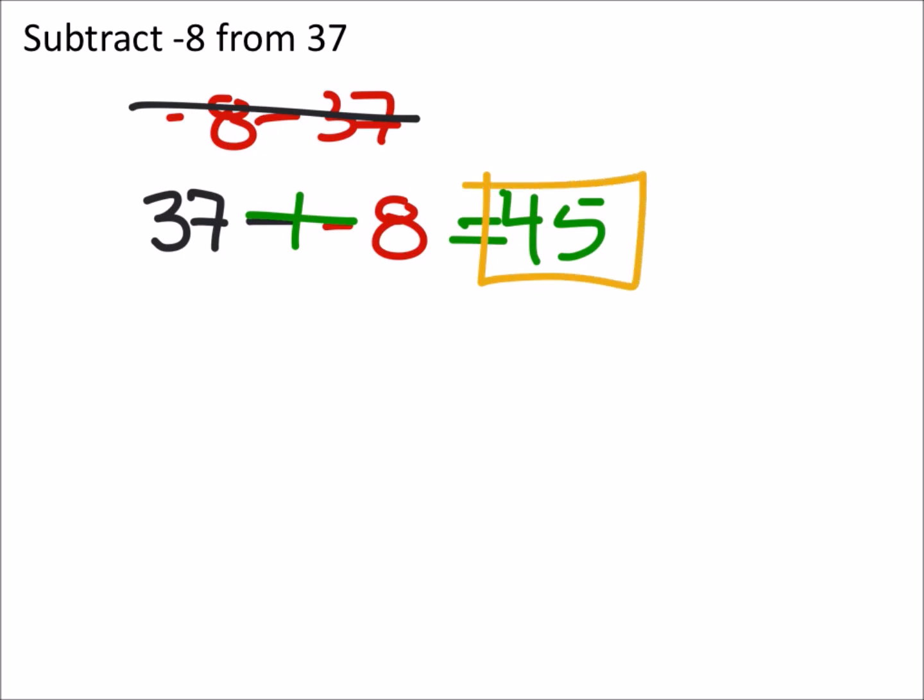So there's our answer. So again, because this is a common mistake I see on these types of problems, some people just do 37 minus 8. So be very careful on those, right? It was to subtract negative 8 from the 37.